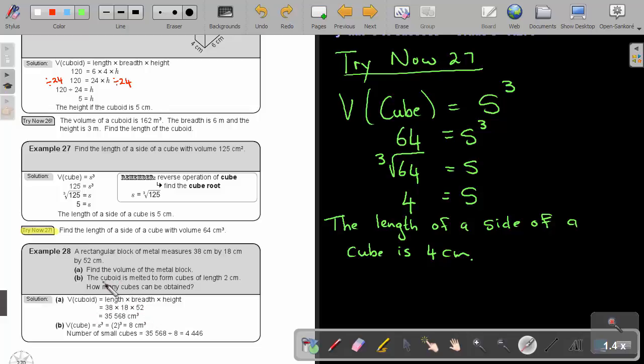Then the cube. This is a bit challenging. The cube is melted to form cubes of length 2 centimeters. How many cubes can be obtained? Remember that same metal is melted. First, remember that the volume of the small cubes will be 2 times 2 times 2, which is 8. Then I just take that big volume of that metal and I divide it by 8. I will get 446 small cubes.